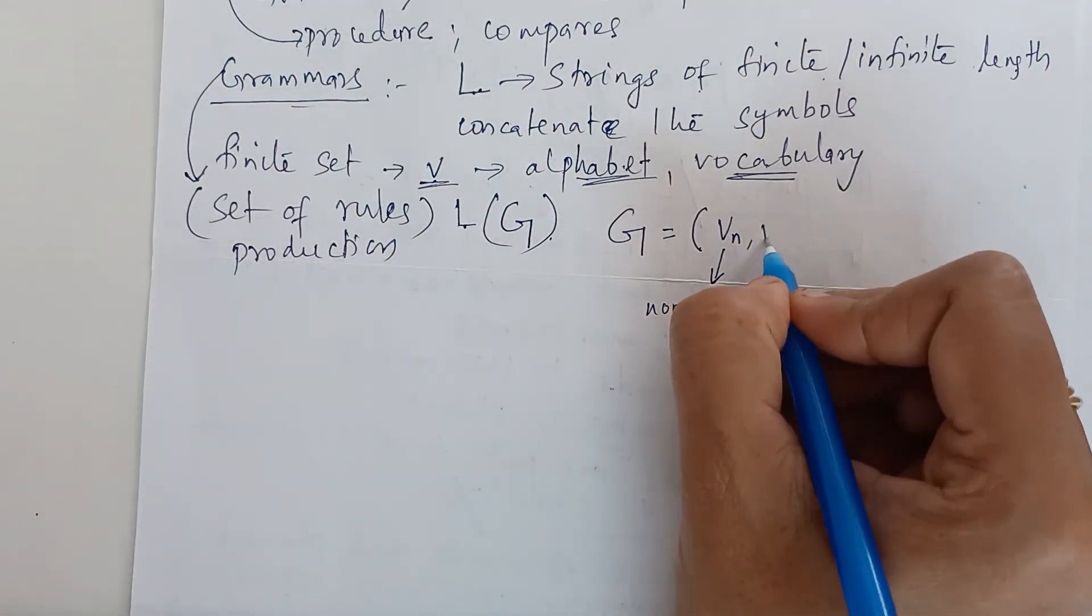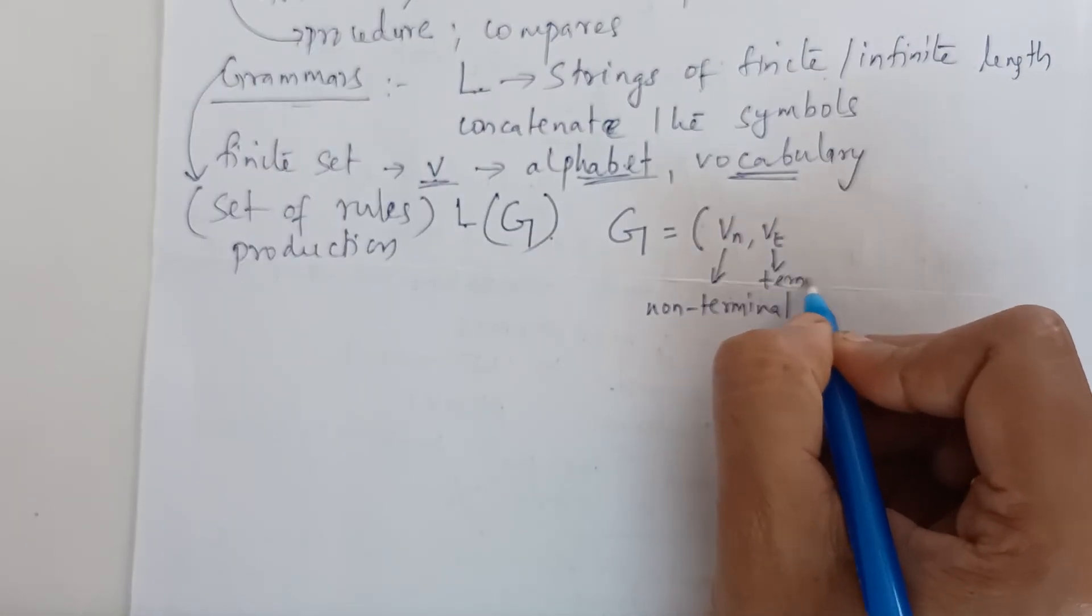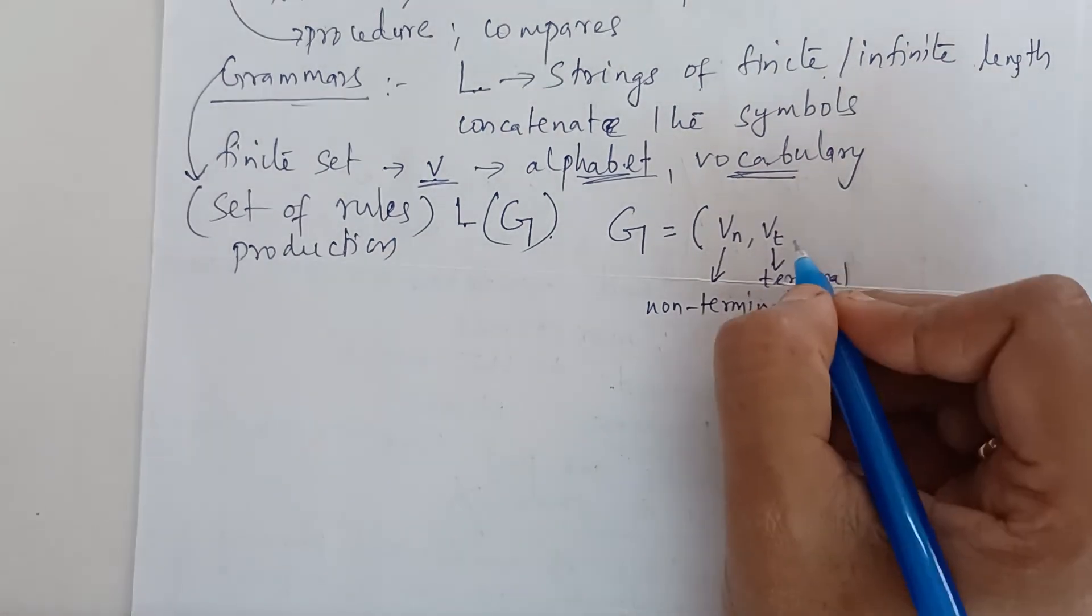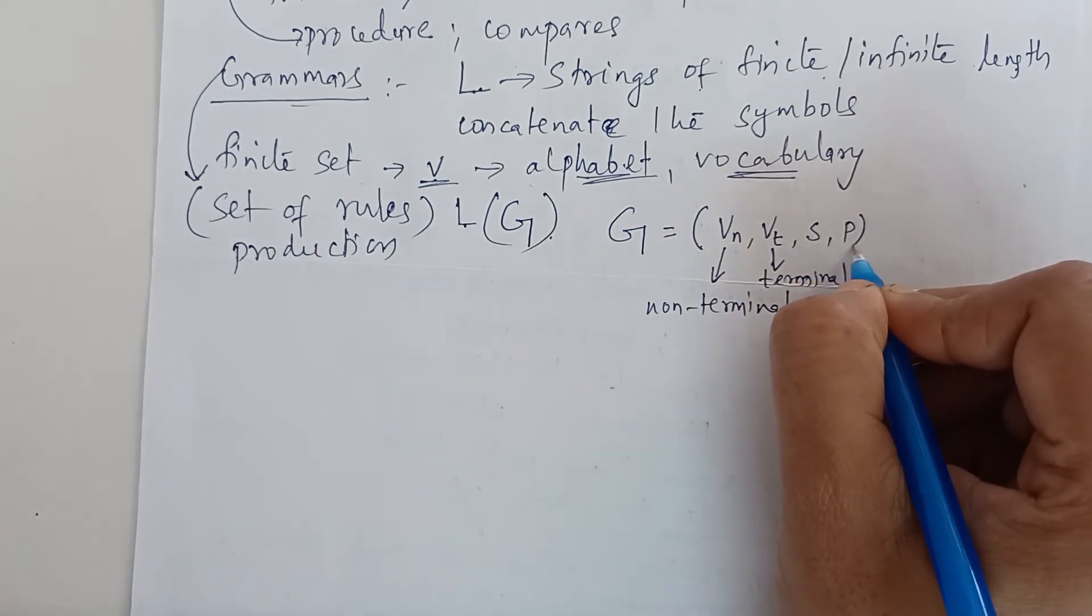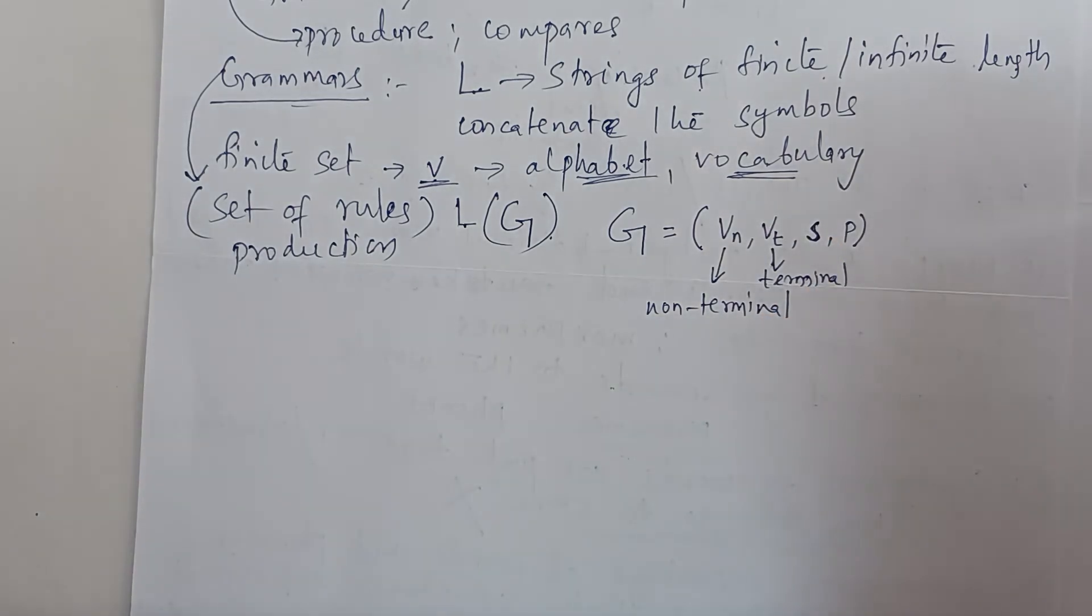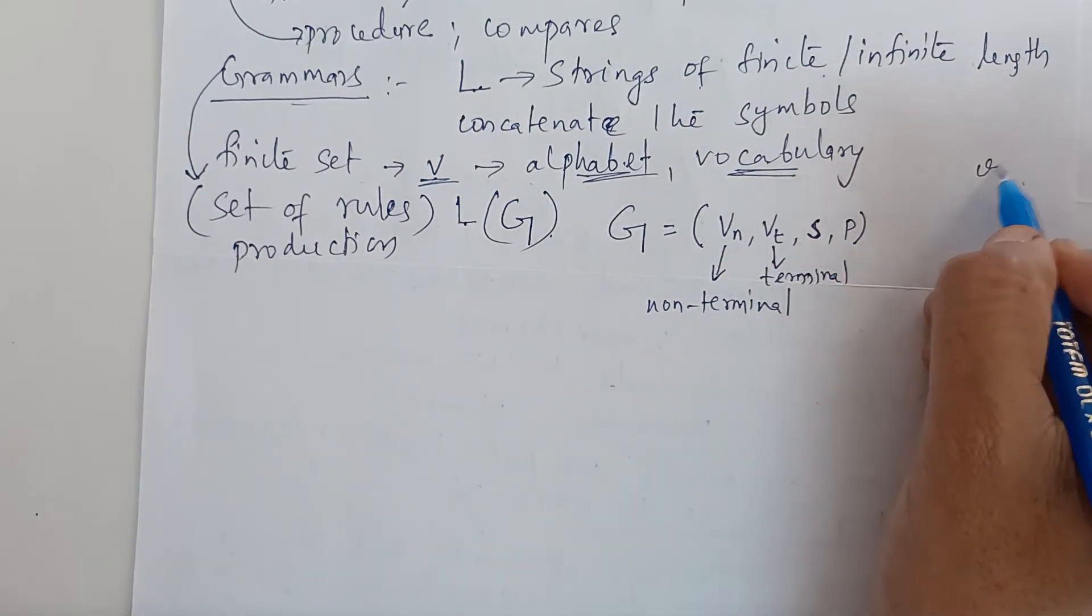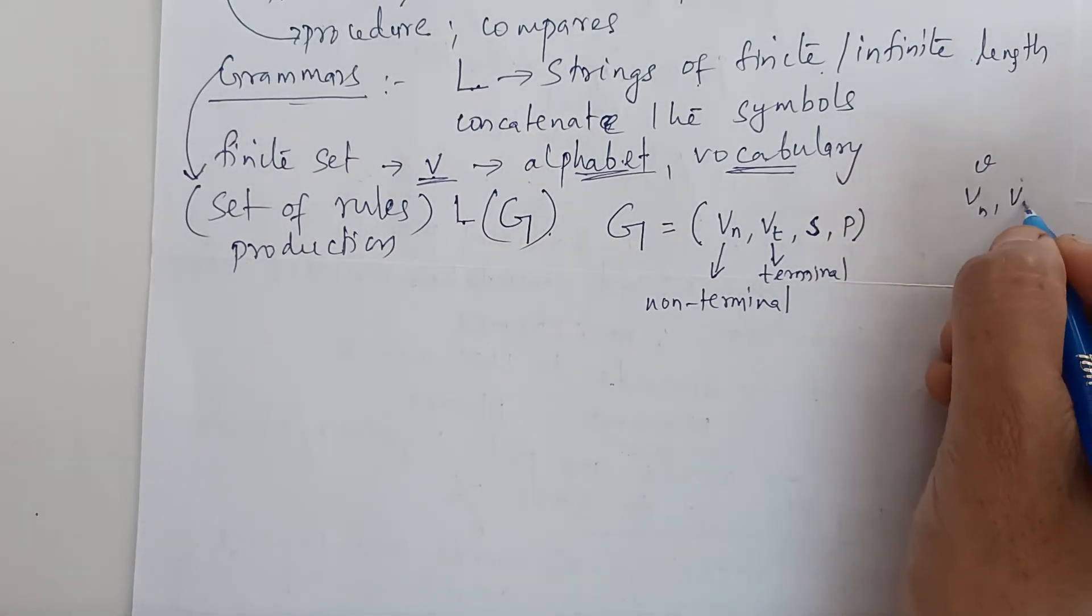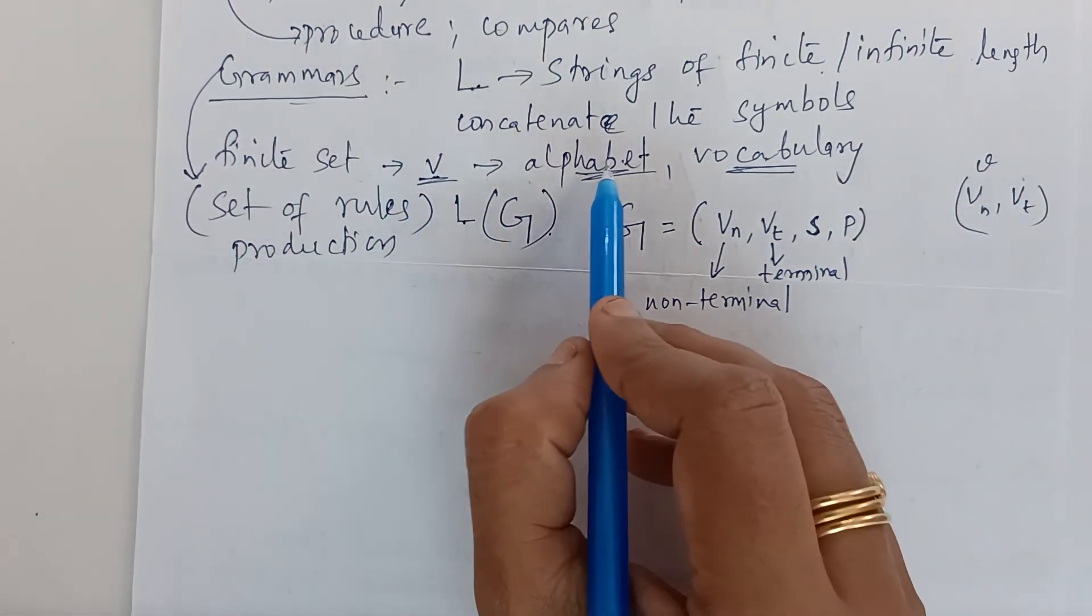Then V of T is terminal symbols. Then S and P. P are production rules. S is the starting symbol. We know that alphabet V is the union of all the destroyer sets, V of N and V of T. That is the terminal and non-terminal. That is a set of non-terminal and terminal symbols.